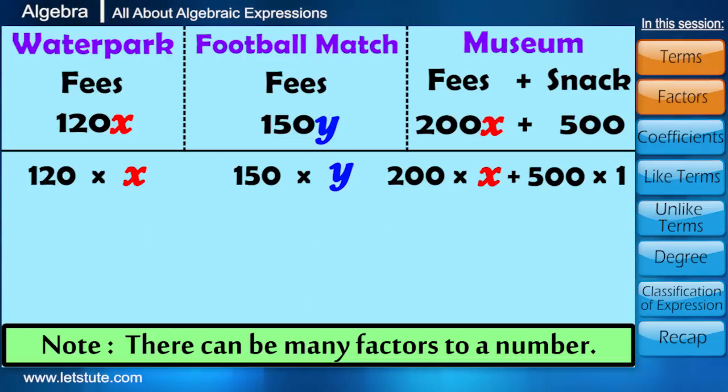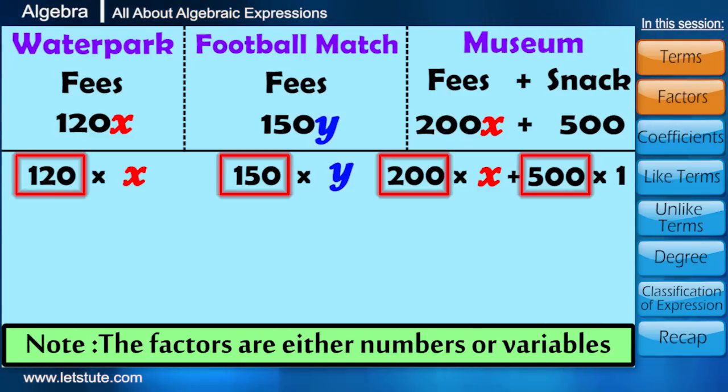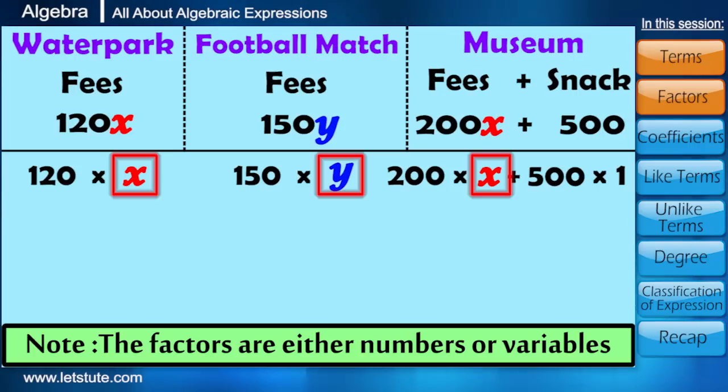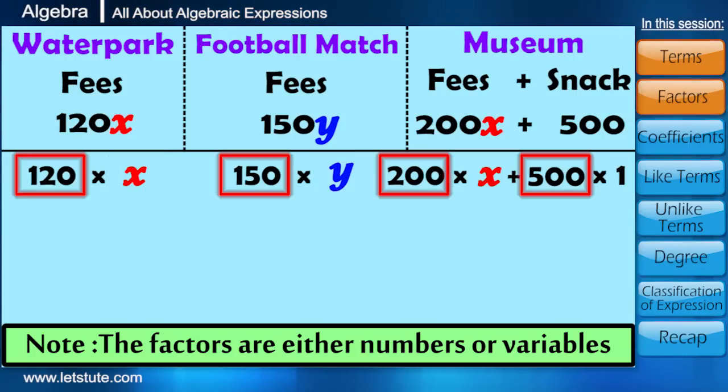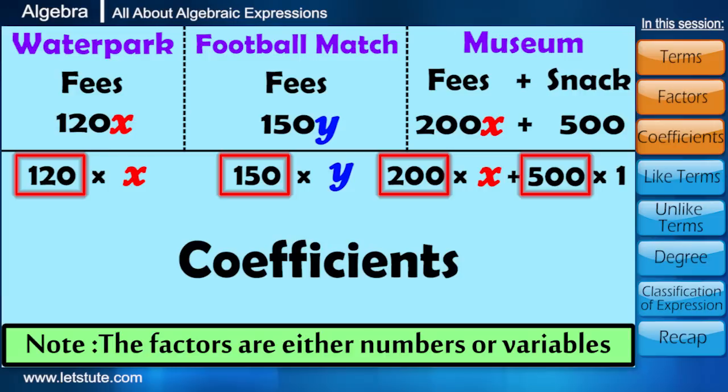Now, we can also see that the factors are either numbers or variables. Friends, the numerical factors are called as the coefficients, and we read it as 120 is a coefficient of X, 150 is a coefficient of Y. I hope you have understood everything so far.